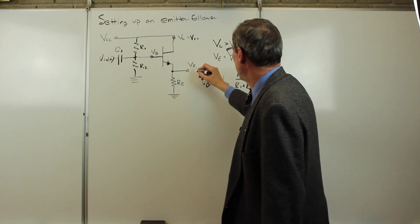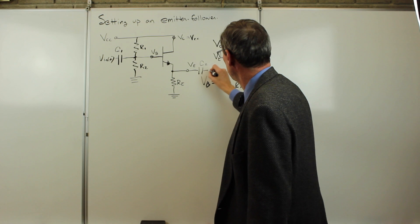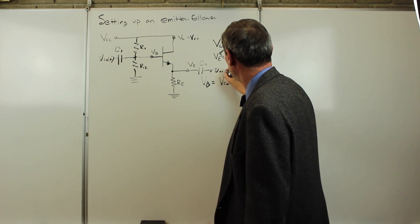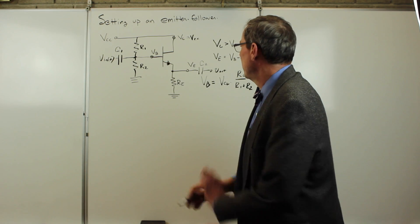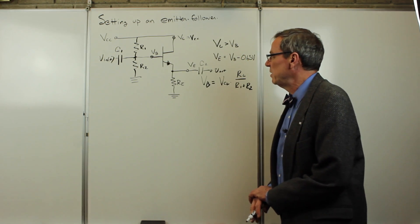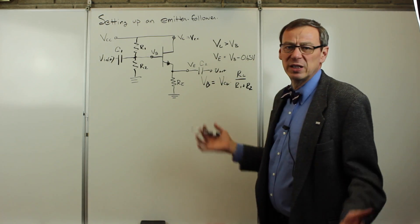We're going to do something similar on the output. We're going to run that through some capacitor C2 and take our output there. So AC in, AC out, and we've got this circuit here. Now we need to figure out how we're going to come up with values for R1, R2, and RE.